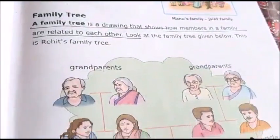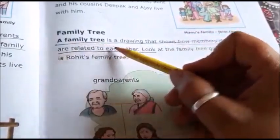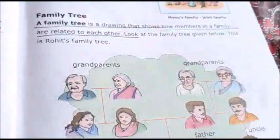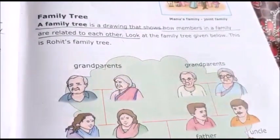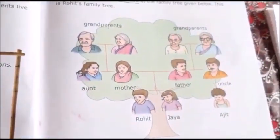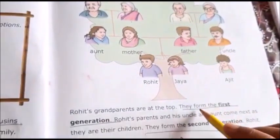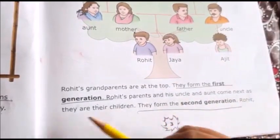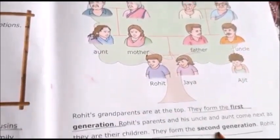Here is a picture of a family tree. A family tree is a drawing that shows how members in a family are related to each other. Look at the family tree given below — this is Rohit's family tree. Rohit's grandparents are at the top; they form the first generation. Rohit's parents and his uncle and aunt come next as they are their children, forming the second generation.